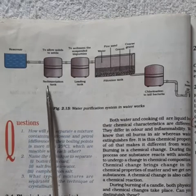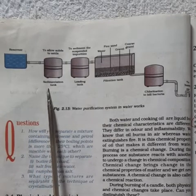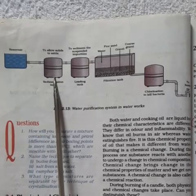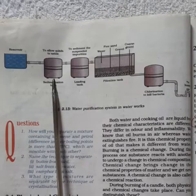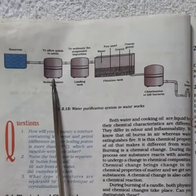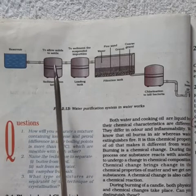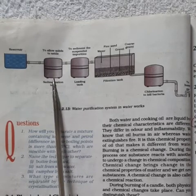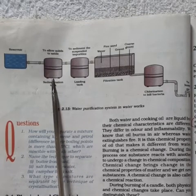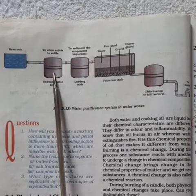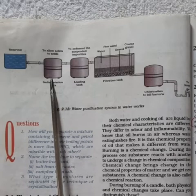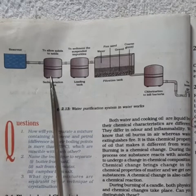First, what happens in sedimentation tank? The river water is pumped into a series of sedimentation tanks. In these tanks, water is allowed to stay for a day. When it is allowed to stay without disturbance, heavy particles, clay and other impurities settle down at the bottom due to the effect of gravity.